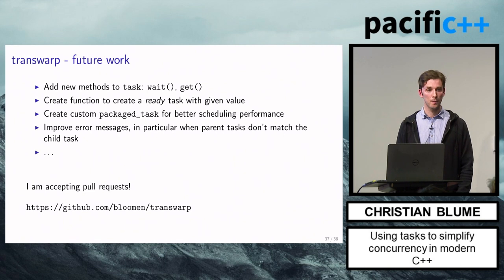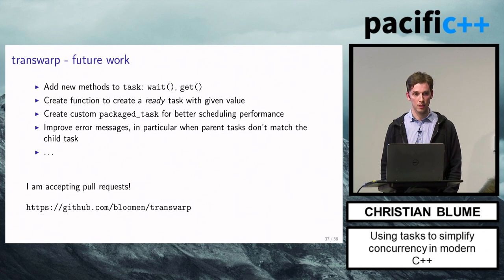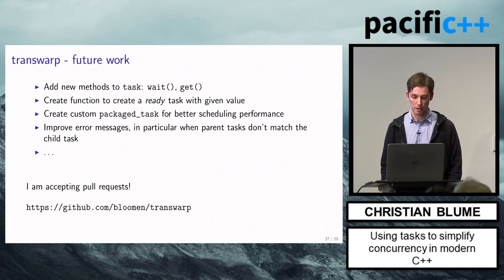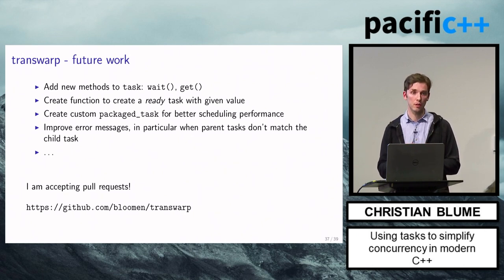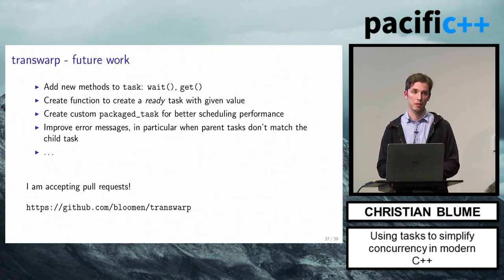Question: are there any performance measurements comparing the different implementations? What I have done is used the statistical distribution example, ran it through Transwarp, and compared it with regular function calls on a single thread. At least on the architecture I've been looking at, I can barely see a difference. There's a difference in debug mode of maybe 7 to 10 percent, but in release mode it goes down to about 1 percent or even lower — sometimes immeasurable.